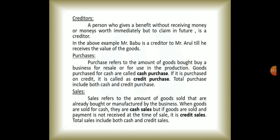The next term is purchases. Purchase refers to goods bought for resale purposes. Purchases can be made on a cash basis, called cash purchase, or on a credit basis, called credit purchase. If you buy goods from someone to resell to another person, it is known as purchases. Cash purchase means goods bought by giving cash, and credit purchase means goods bought on a credit basis.